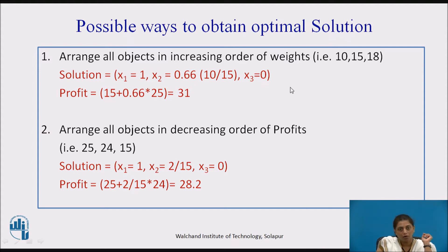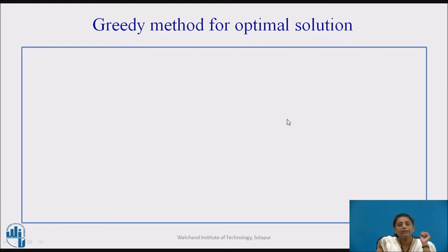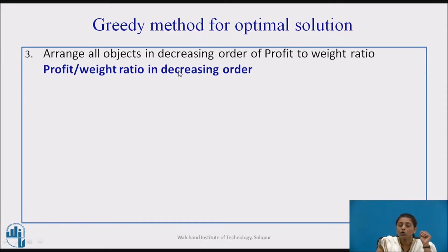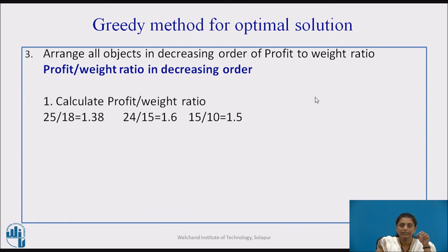We need to consider both weight and profit together. The greedy method for obtaining the optimal solution is to consider the ratio of profit to weight — as much weight as we take, that much profit we gain. So we arrange all objects in decreasing order of profit-to-weight ratio. We calculate the ratio for the given example and get 1.38, 1.6, and 1.5. We arrange in decreasing order: 1.6, 1.5, and 1.38, and reorder the weights and profits accordingly.